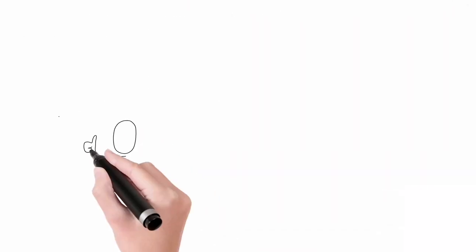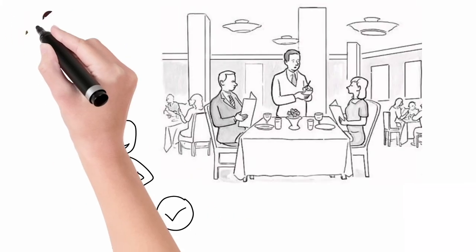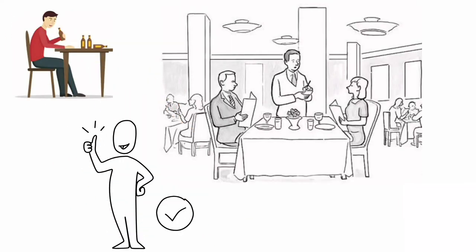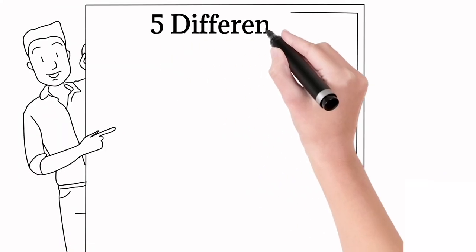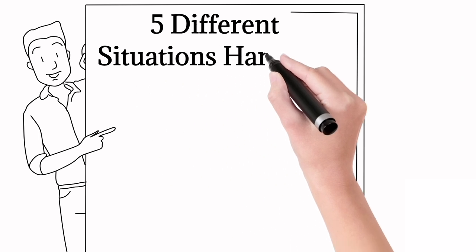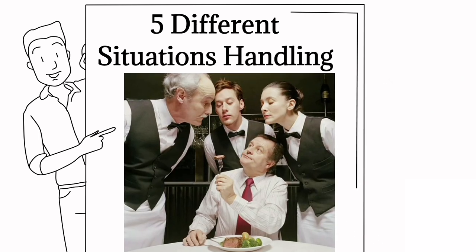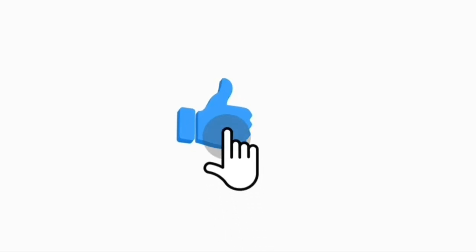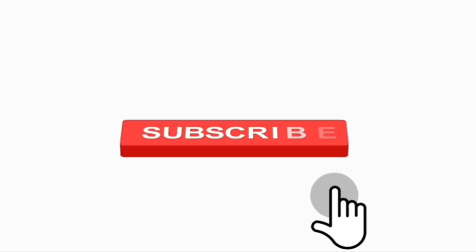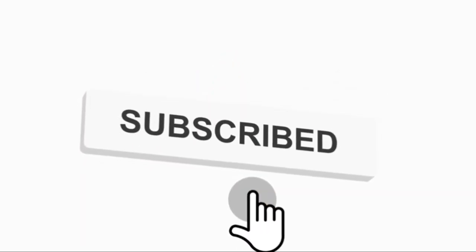In this way we can avoid issues and maintain the good reputation of the outlet. It is part of a waiter's responsibilities to monitor guests' alcohol consumption limits as well. I hope these five different situations and how to handle them in a restaurant or bar will be helpful for you at work. Thanks for watching — if you want to watch more videos like this, subscribe to my channel, Hospitality Doodle, and click the notification bell to get all updates.